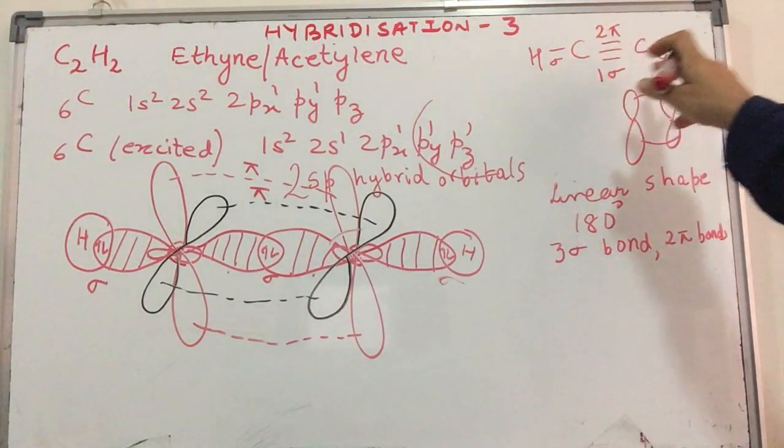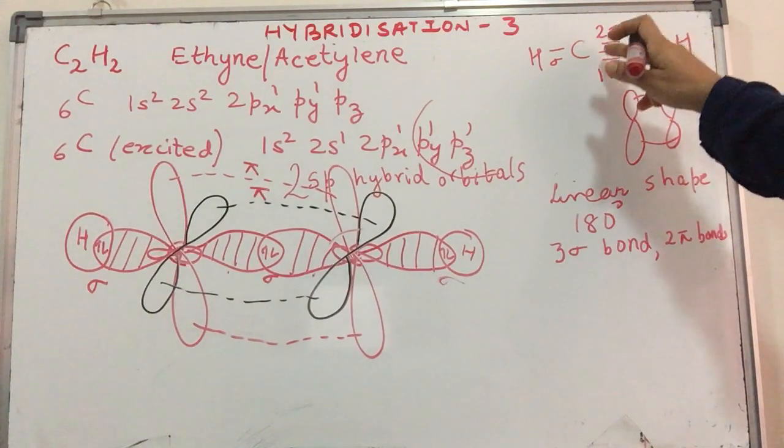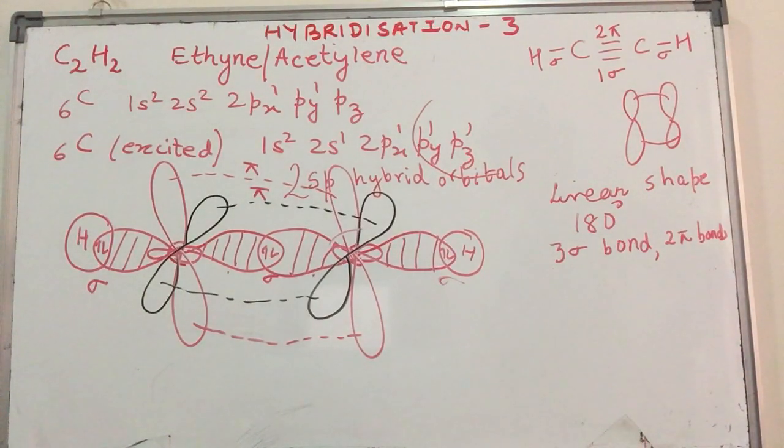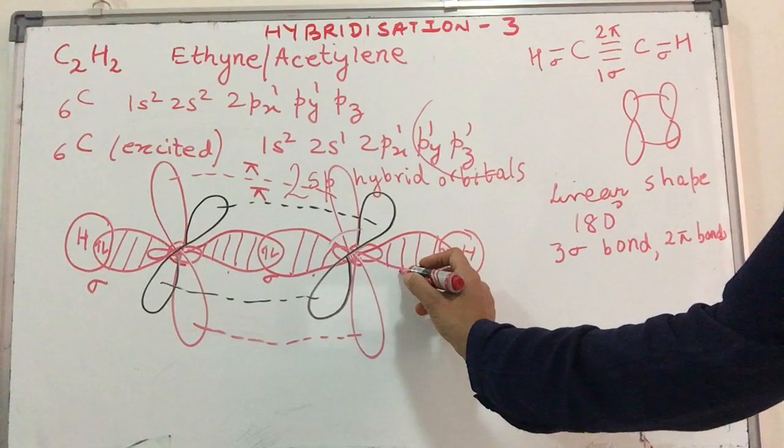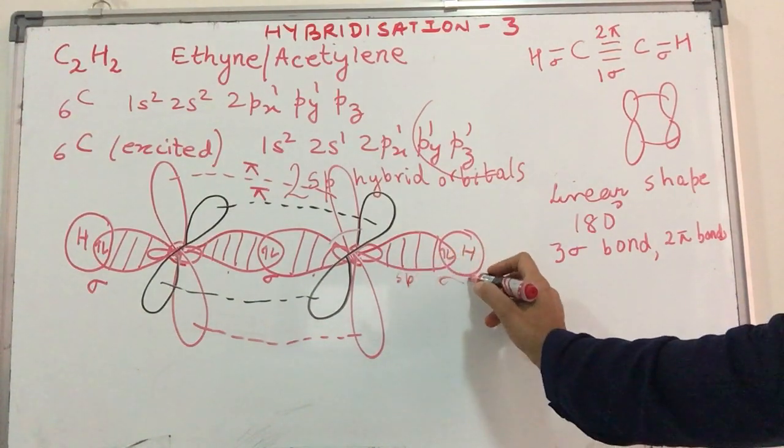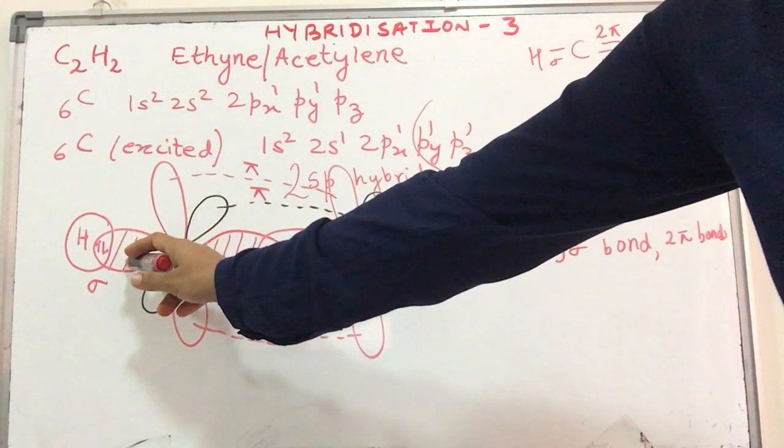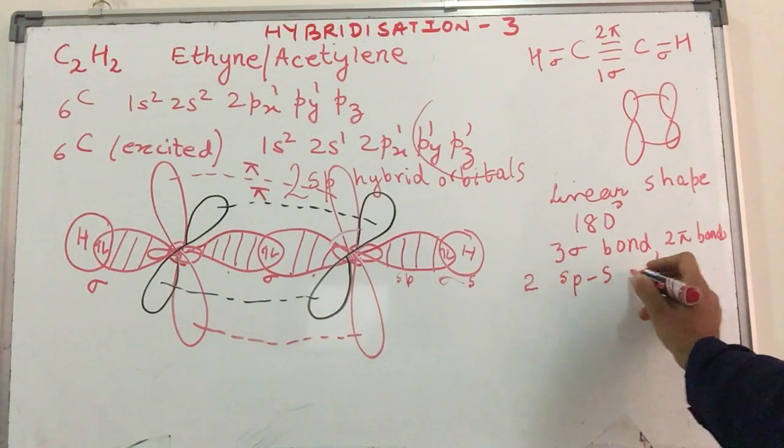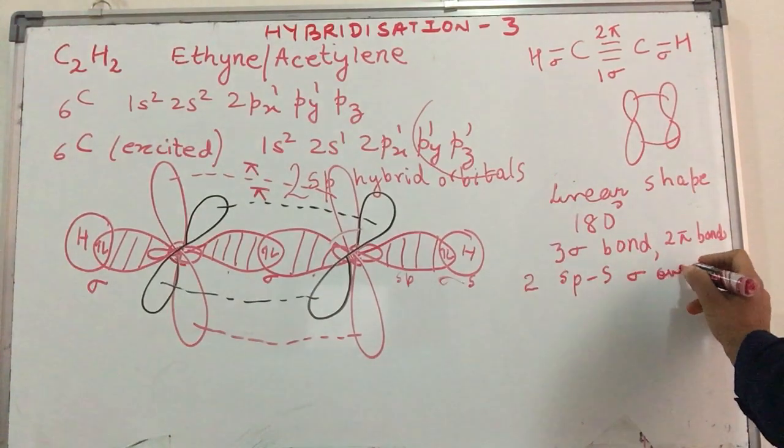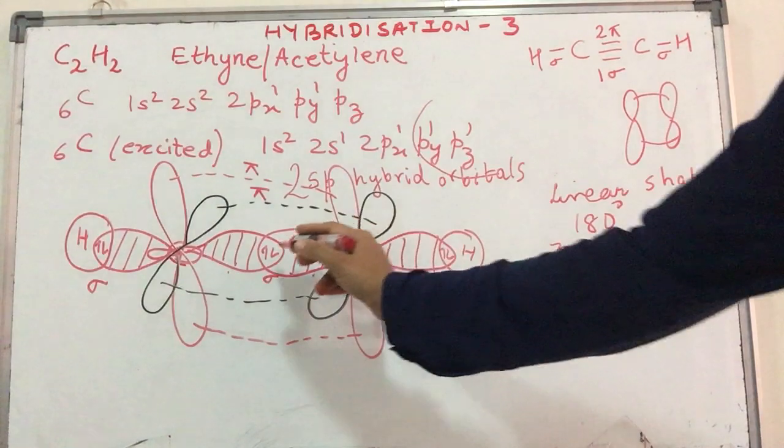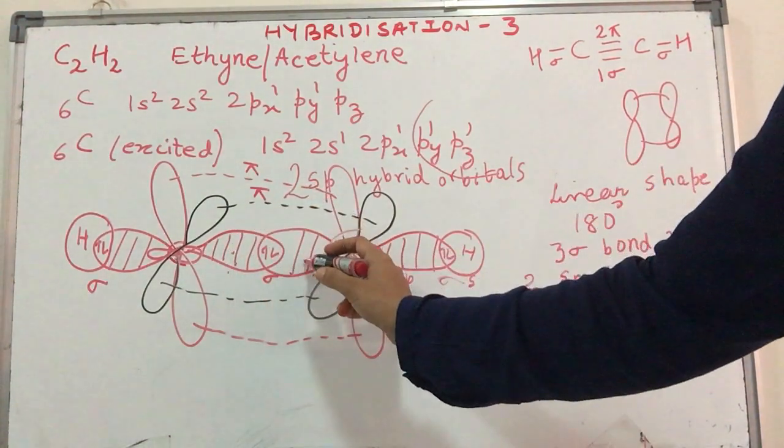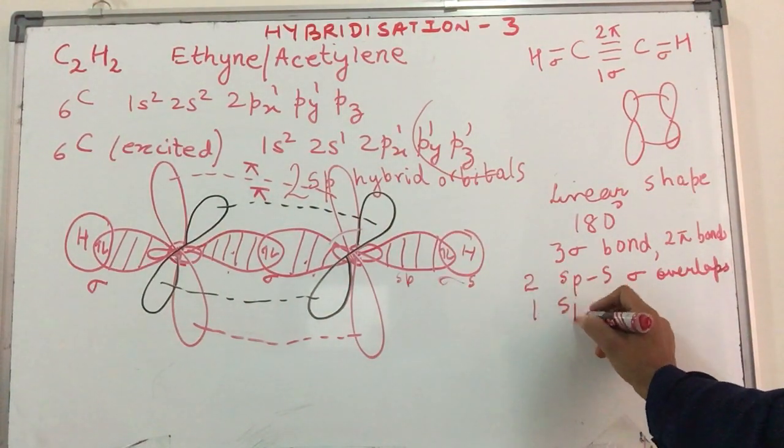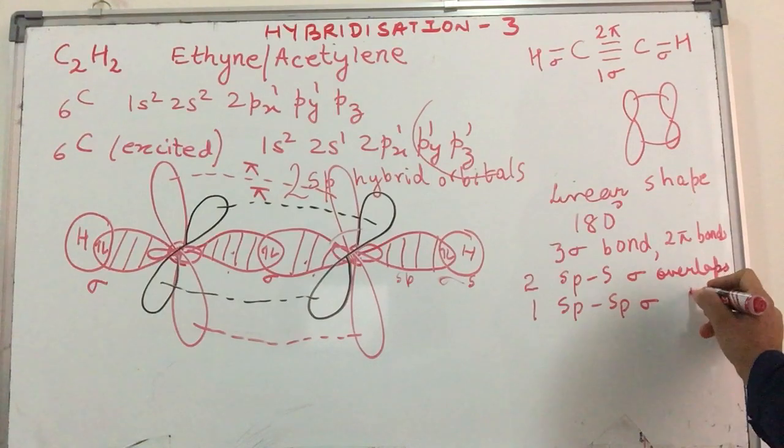Mind you, in the molecule there are three sigma bonds, but between two carbon atoms there is only one sigma bond. What are the type of overlaps involved here? We have an sp and an s orbital overlapping here, and sp and an s orbital overlapping here. So I have two sp-s sigma overlaps, whereas here it is the sp hybrid orbital overlapping with an sp hybrid orbital to form a sigma bond. So I will have one sp-sp sigma overlap.